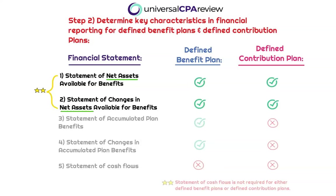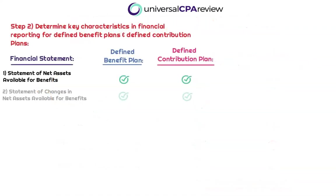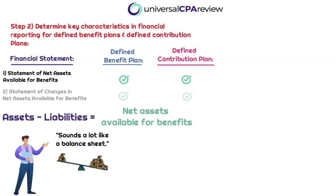Net assets is the key buzzword here. The statement of net assets available for benefits shows the pension plan's total assets less its total liabilities, which equals the total net assets available for benefits, and this is generally shown for the last two years. Assets minus liabilities equals net assets available for benefits — that sounds a lot like a balance sheet. In the same way that assets minus liabilities can equal stockholders' equity, these assets minus these liabilities will equal net assets available for benefits.